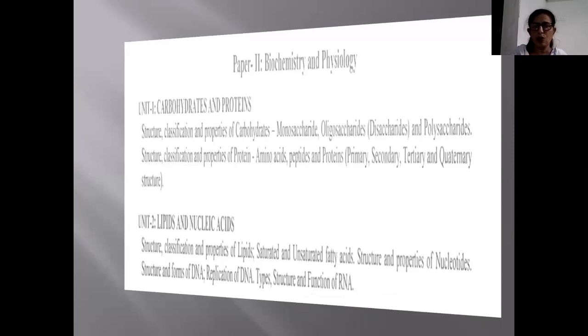The first unit consists of Carbohydrates and Proteins. That is, which type of Carbohydrates are present in these Microorganisms and the Proteins which are found. Commonly, it deals with all types of Carbohydrates and Proteins with special respect to the Microorganisms. The Structure and Classification of Carbohydrates such as the Monosaccharides, Oligosaccharides. In Oligosaccharides, we are having Disaccharides and Polysaccharides.